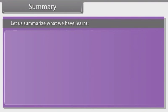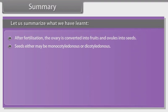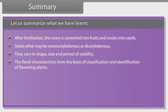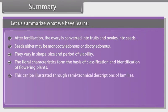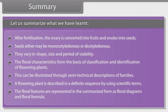Summary: After fertilization, the ovary is converted into fruits and ovules into seeds. Seeds may be monocotyledonous or dicotyledonous, and vary in shape, size and period of viability. The floral characteristics form the basis of classification and identification of flowering plants. This can be illustrated through semi-technical descriptions of families. A flowering plant is described in a definite sequence using scientific terms, with floral features represented in summarized form as floral diagrams and floral formulae.